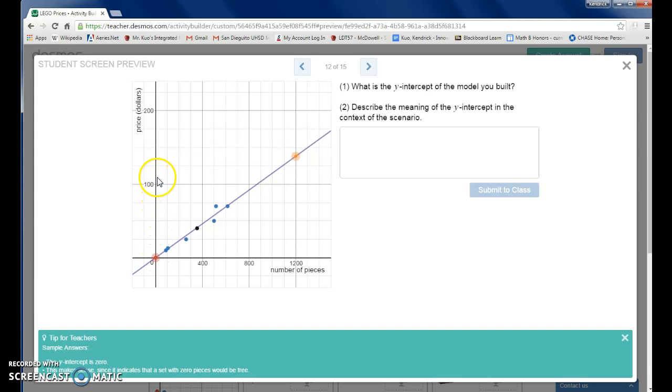So the y-axis is the vertical axis, and it usually deals with the price or the cost. The x-axis here is the number of pieces.